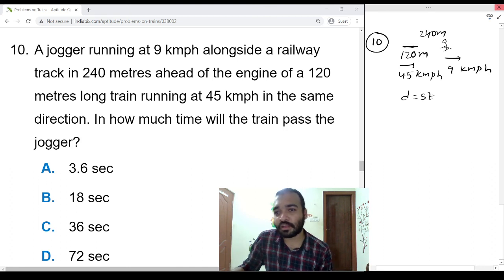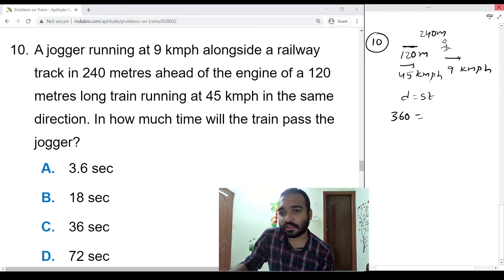Distance equals speed times time. It has to cover 120 meters plus 240 meters to cross this person. That is equal to 360 meters. This is in km/h. Both are in the same direction, so 45 minus 9 is 36 times 5 by 18 times time.